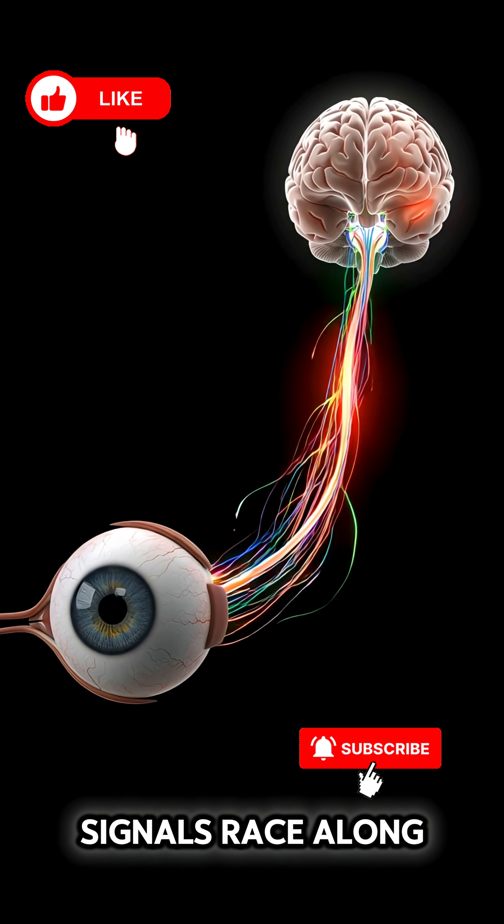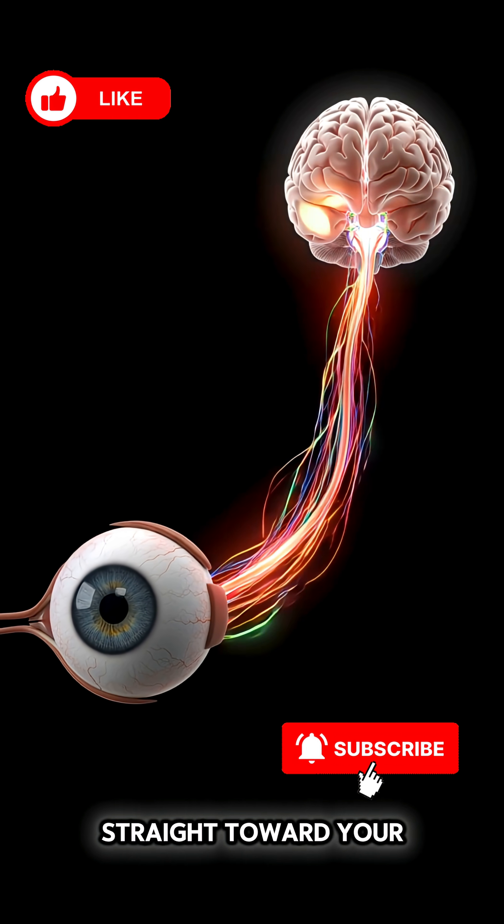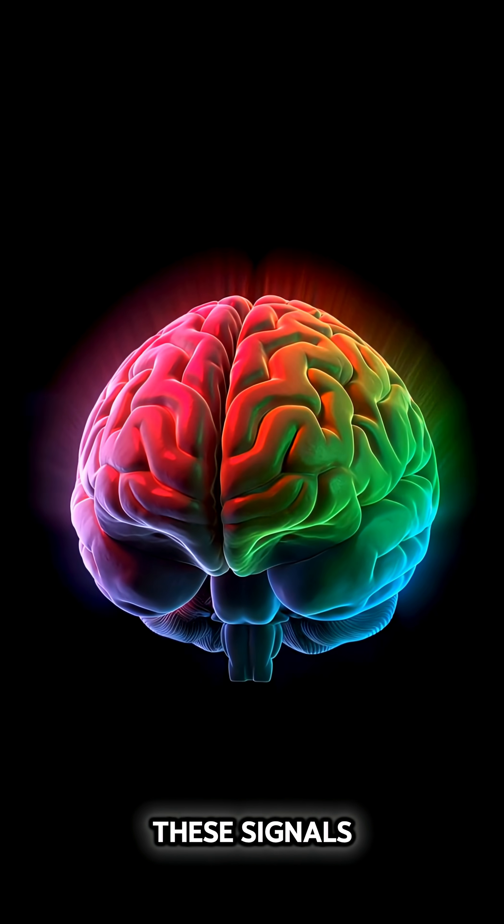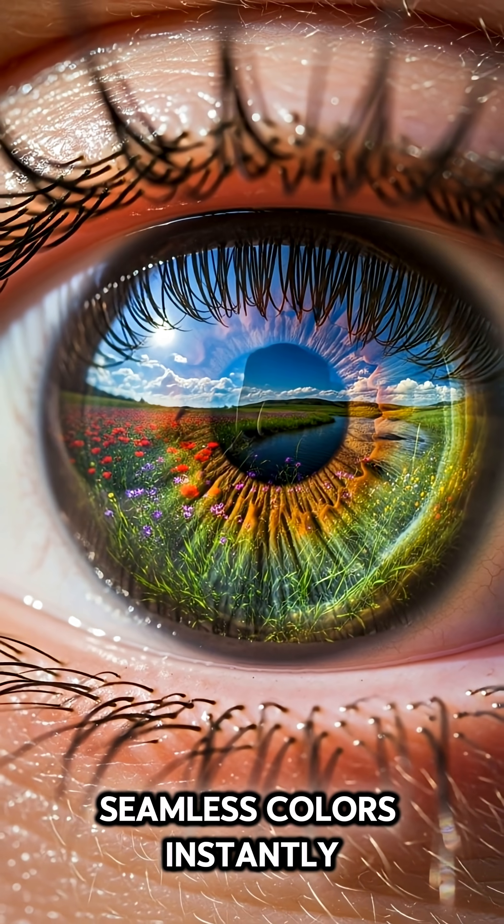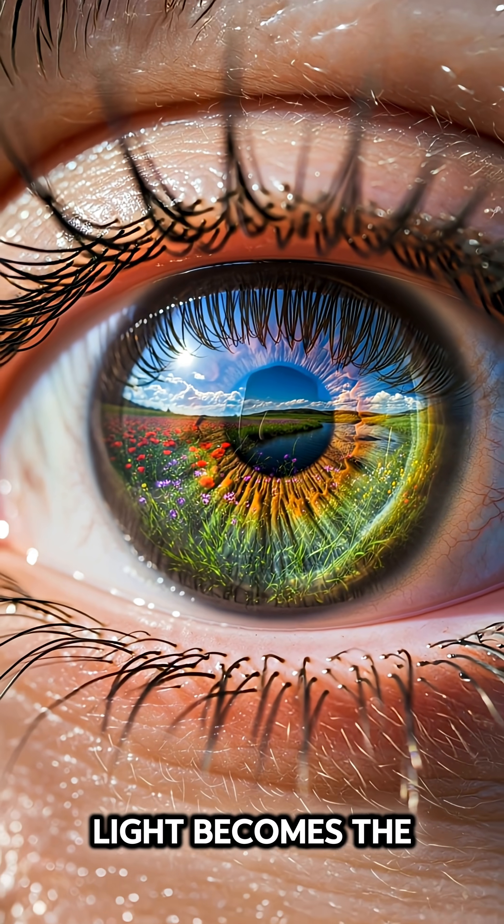From the retina, signals race along the optic nerve, straight toward your brain. Your brain blends these signals, creating millions of rich, seamless colors instantly. And in a blink, light becomes the vibrant, colorful world you see.